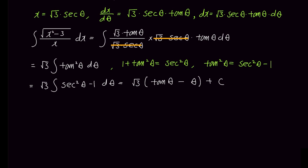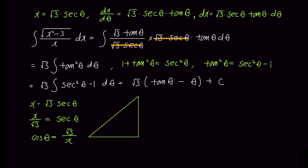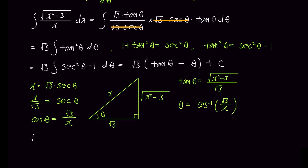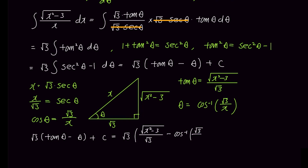However, this is still in terms of theta. Since x was substituted as square root 3 secant theta, x over square root 3 becomes secant theta, and taking the reciprocal gives cosine theta equals square root 3 over x. Drawing a right triangle: the adjacent side is square root 3 and the hypotenuse is x, so the opposite side is square root of x squared minus 3. Therefore tangent theta equals square root of x squared minus 3 over square root 3, and theta equals arc cosine of square root 3 over x. Substituting back, the final answer is square root of x squared minus 3 minus square root 3 times arc cosine of square root 3 over x plus C.